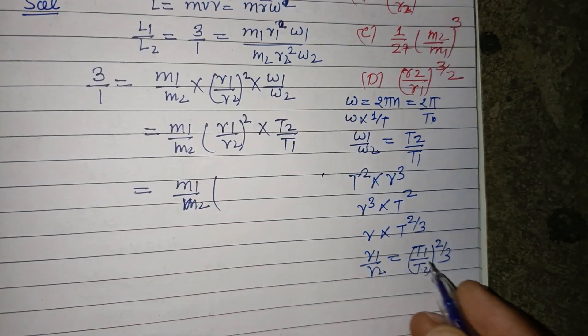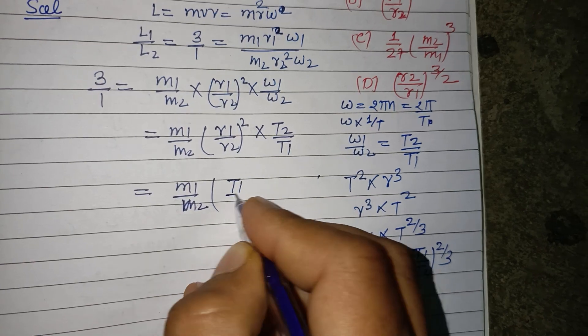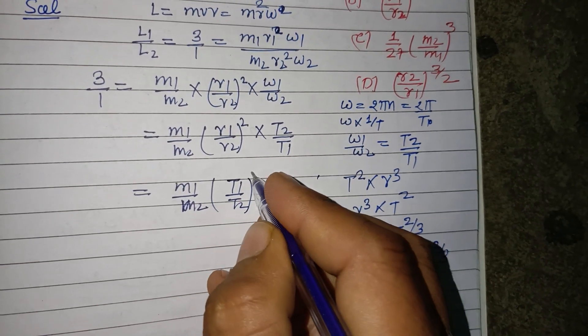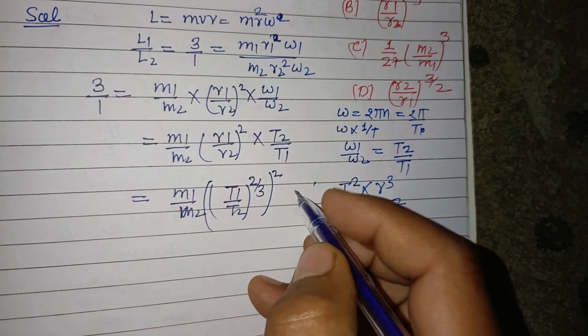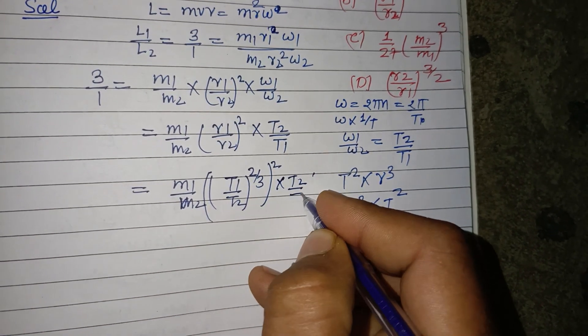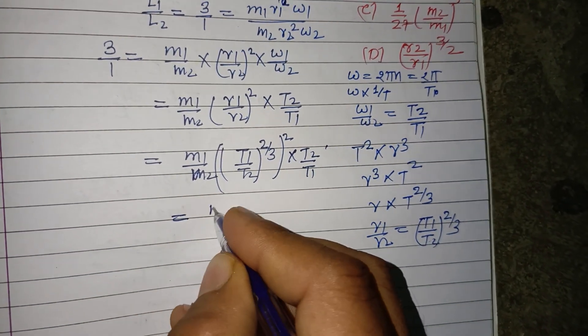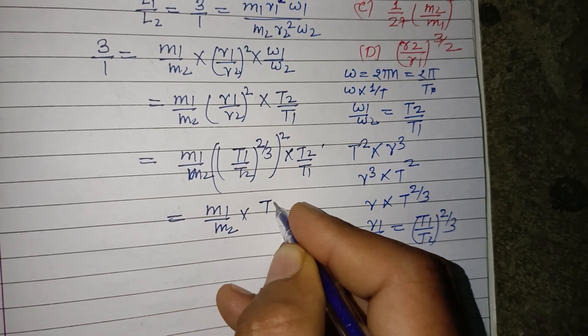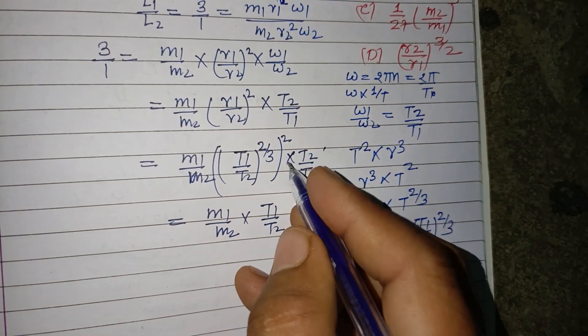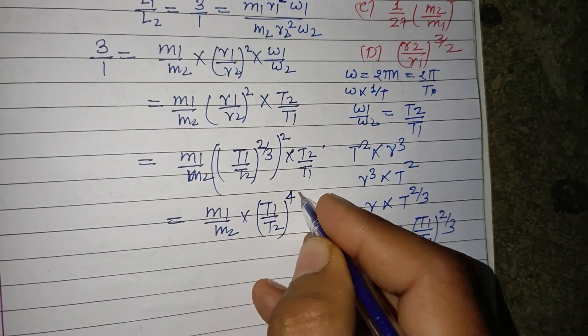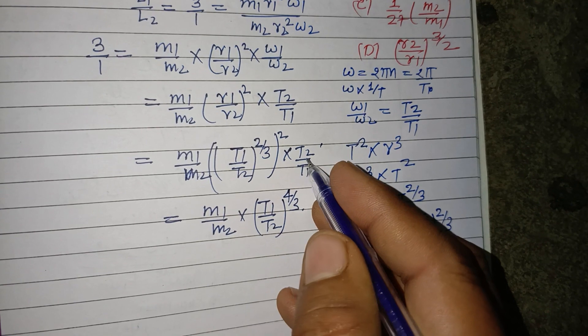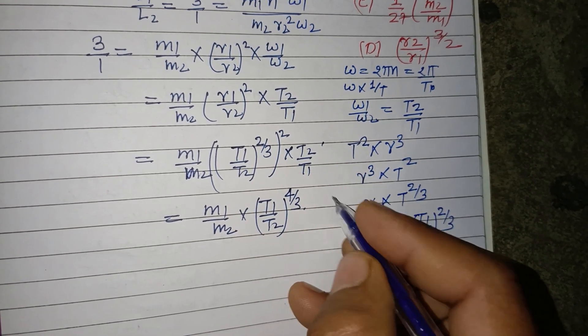M1 upon M2, R1 upon R2 is T1 upon T2 to the power 2/3 to the power 2, into T2 upon T1. So this is M1 upon M2, T1 upon T2 to the power 2/3 into 2, this is 4/3...